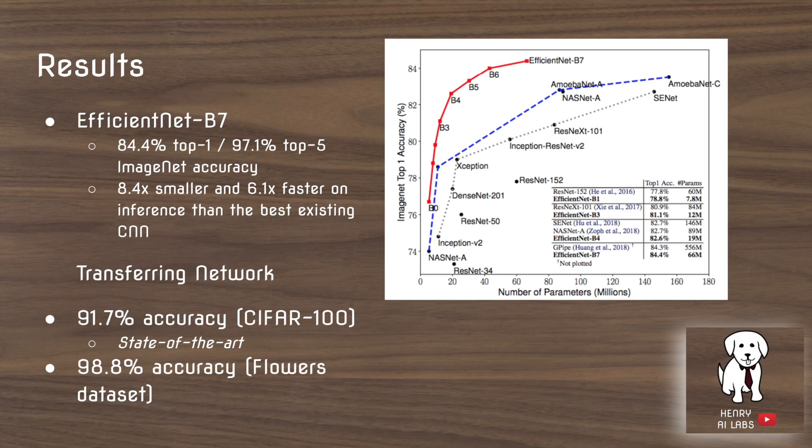These are the results they find. They achieve state-of-the-art accuracy on ImageNet, and in addition it's much more computationally efficient with far fewer parameters than existing state-of-the-art methods. They also transfer this architecture to CIFAR-100, achieving state-of-the-art, and to the Oxford Flowers dataset, which is also likely state-of-the-art.